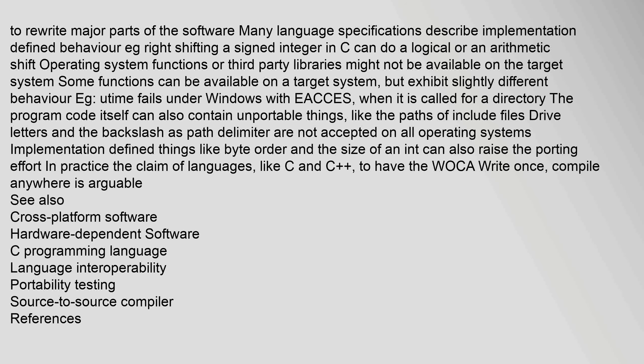Many language specifications describe implementation-defined behavior. For example, right-shifting a signed integer in C can do a logical or an arithmetic shift. Operating system functions or third-party libraries might not be available on the target system. Some functions can be available on a target system but exhibit slightly different behavior — for example, utime() fails under Windows with EACCES when called for a directory. The program code itself can also contain unportable things like paths of include files. Drive letters and the backslash as path delimiter are not accepted on all operating systems.